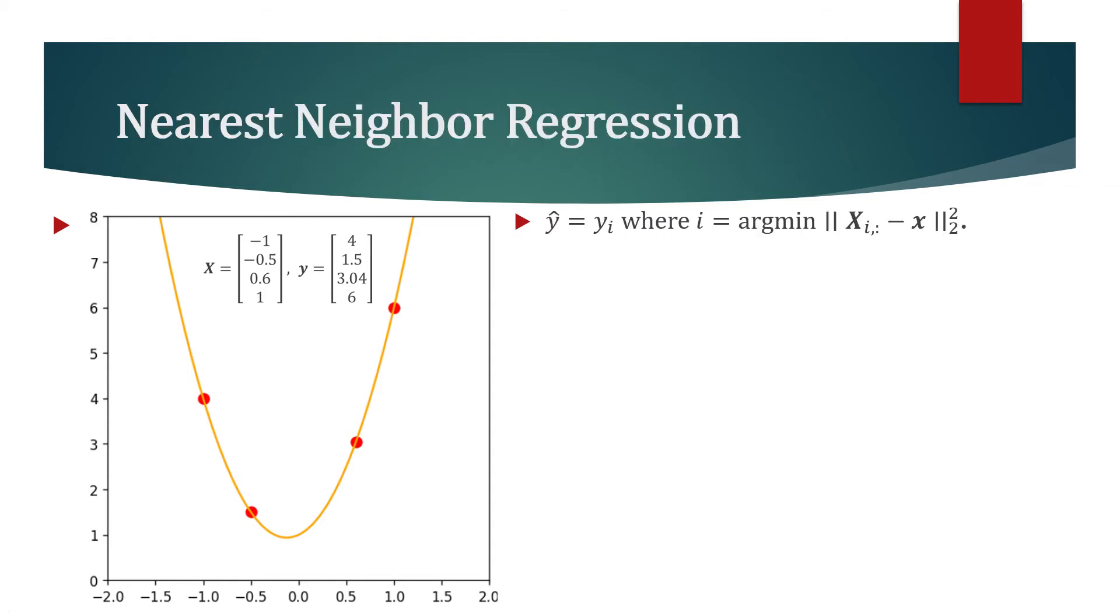When the nearest neighbor regression model has to predict for a test point x, it looks up the nearest entry in its training set and returns the associated regression target. So let's now use this algorithm and predict for minus 0.8.